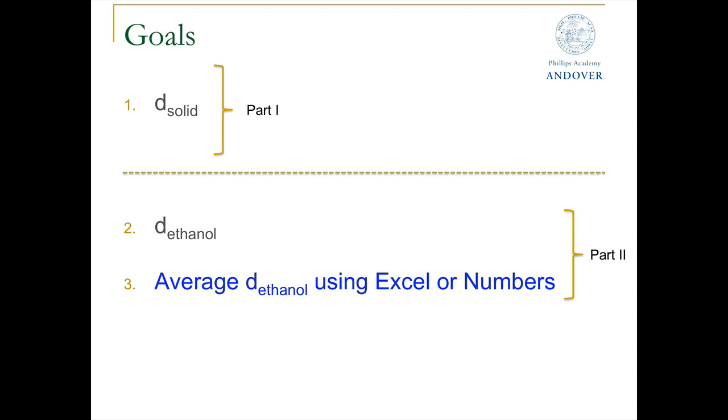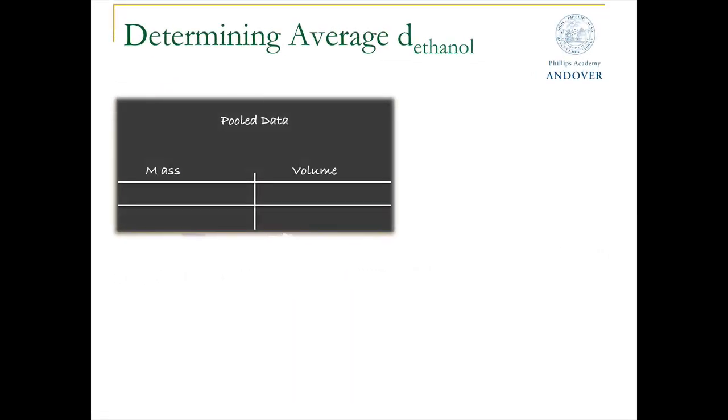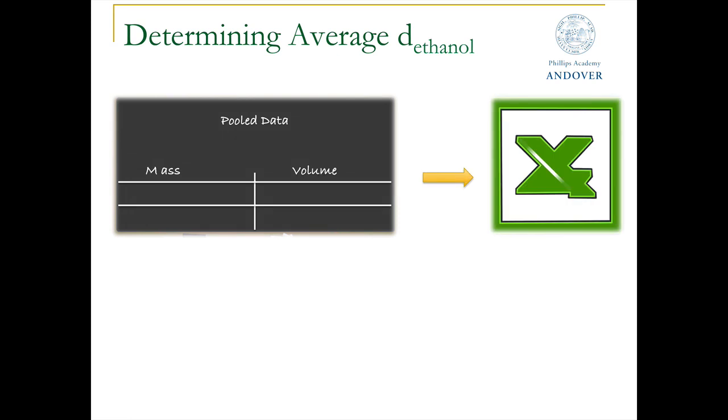More importantly, we know that we can get a much more accurate answer by averaging all the densities that your classmates calculated. Now, we're actually not going to take the densities, sum them up, and divide by the total sample size to calculate the average. Instead, we're going to use a graphical approach using Excel or Numbers, and it's important that you understand what we're doing here. The first thing that you need to do is put your values for mass and volume up on the board. Your classmates will do the same, and you must record this before you leave the lab. From there, you will plug this information into Excel or Numbers. Now, for those of you who don't know how to use this program, we have provided a video tutorial in the lab module section that covers everything we will discuss shortly.